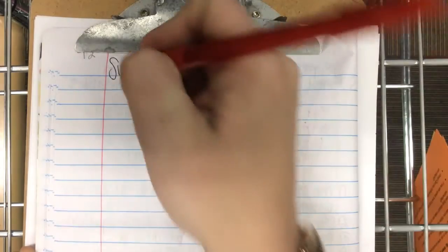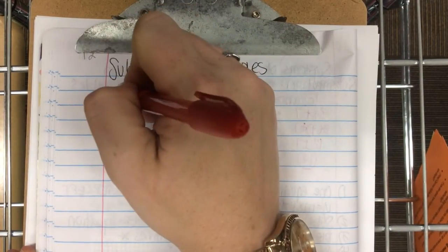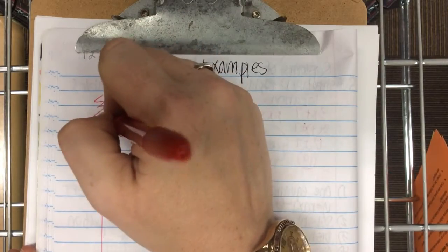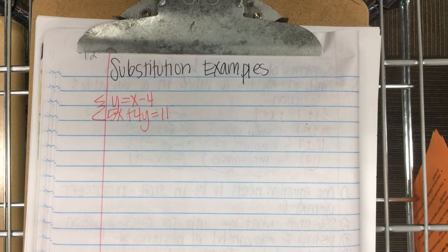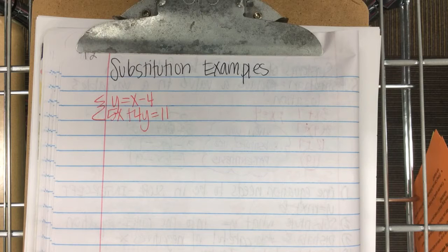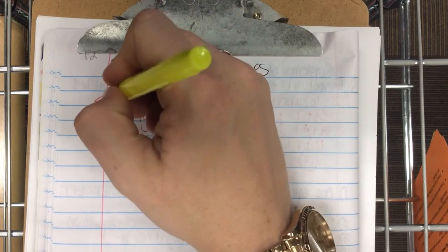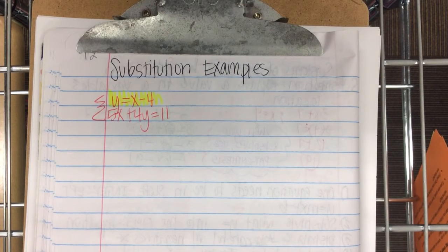All right. Let's try one right now. Y equals x minus 4. And 5x plus 4y equals 11. Step number one. Step number one on your notes was one must be in slope intercept form. Is that done? Yes. I'm going to highlight it just so you can see clearly that one is in y equals mx plus b form.